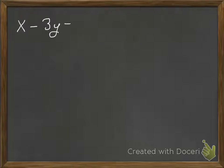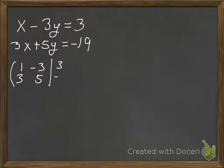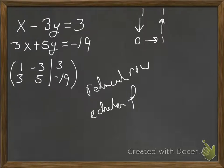We're going to solve this system of equations: x minus 3y equals 3, and 3x plus 5y equals negative 19. The first thing we're going to do is write our augmented matrix. We'll write our coefficients — 1, 3, negative 3, 5 — with an augmentation line for the equal signs, then 3 and negative 19. Our goal is reduced row echelon form, or RREF as it's called in your calculator.